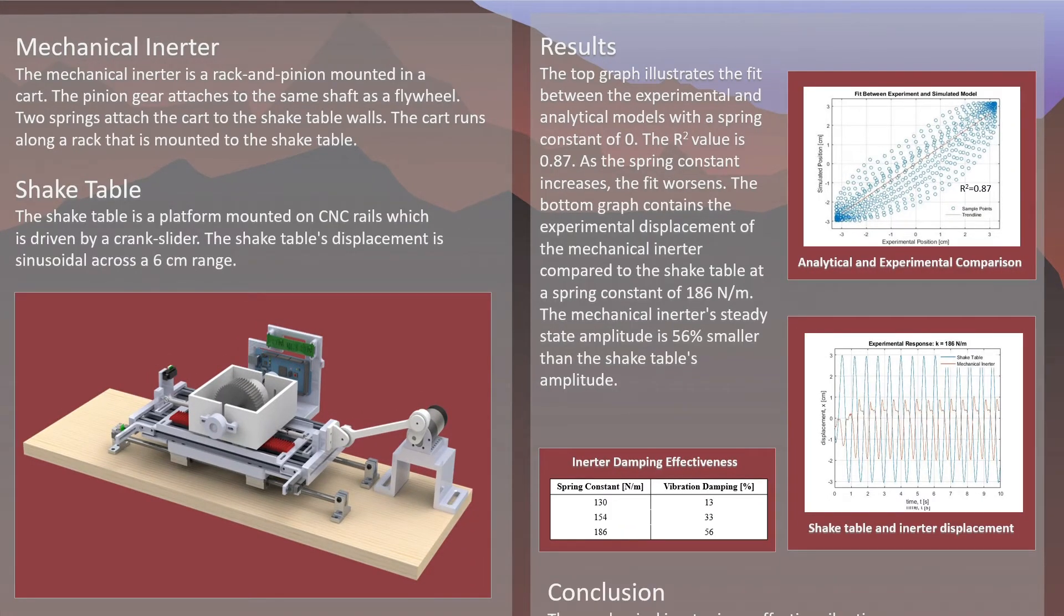Using the data obtained from the shake table testing, as well as the analytical model discussed earlier, we were able to obtain meaningful results from these experiments. The plot on the top right shows the simulated position of the mechanical inerter according to the analytical model on the y-axis, with the experimental position of the mechanical inerter according to the shake table testing on the x-axis. The R-squared value for these data points is 0.87, meaning that the analytical model is a relatively good fit but has room for improvement.